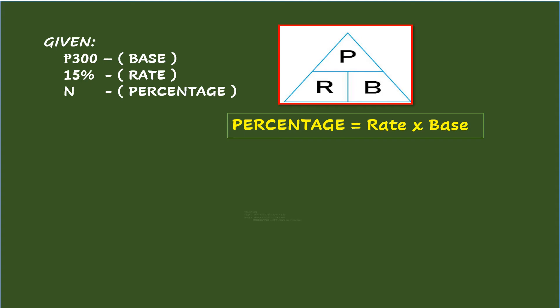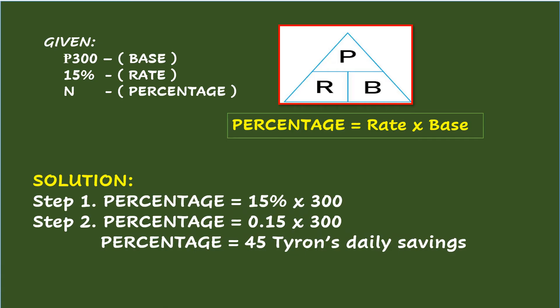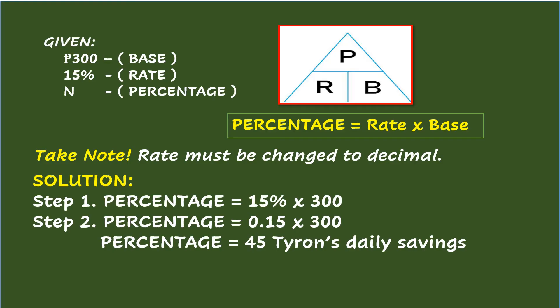For the solution, Step 1: assign numbers for the given formula. Percentage equals 15% times 300. Take note that rate must be changed to decimal. Changing 15% to decimal, divide 15 by 100, or simply move the decimal point twice to the left. So 15% is 0.15 in decimal. Step 2: 0.15 times 300. Multiplying this, the percentage is 45, or 45 pesos, which is Tyrone's daily savings.